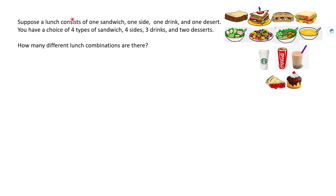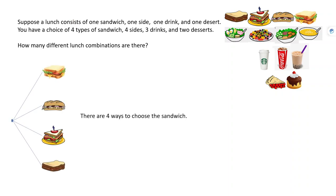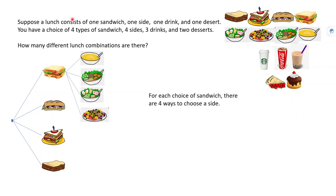Our first example is choosing a lunch. I'm going to choose a kind of sandwich, then a kind of side, then a drink, and then a dessert. We want to know how many possible lunches there are. I'm going to view this as a sequence of tasks: choosing the sandwich first, then the side, then the drink, then the dessert. There are four ways to choose a sandwich, and for each sandwich we can have four sides.